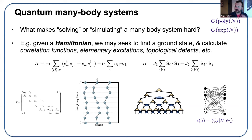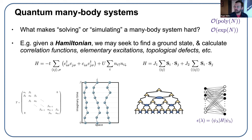Any tensor network methods — DMRG, PEPS — have exponential difficulty in various aspects once you get past one dimension. If you have a one-dimensional system and start building a two-leg ladder, the bond dimension grows in a way that can give exponential difficulty. Variational Monte Carlo also has issues related to finding ground states, which are minima of some optimization function related to the expectation value of the Hamiltonian.